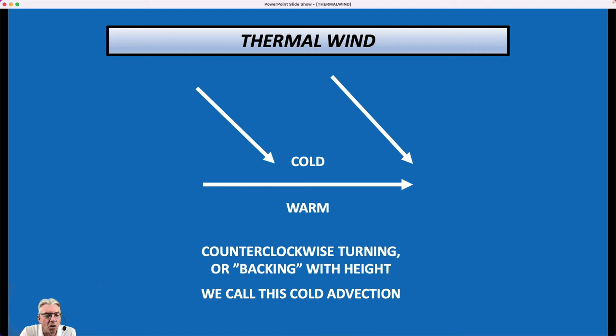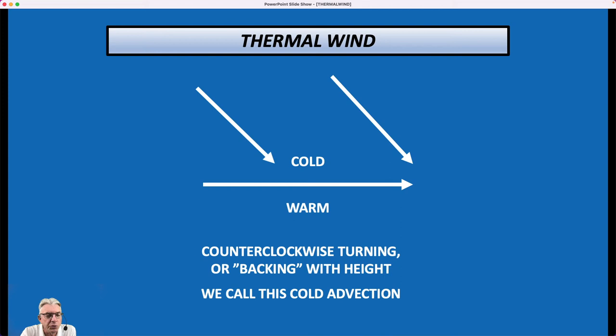In other words, the wind is advecting colder air in the direction of where the warm air is, and so if you're in between the two, you're getting colder with time. And you can sort of see that if you think of this arrow, the thermal wind as being an isotherm, a line of equal temperature, and the winds are blowing against it like that, then the cold air is going to advance or advect farther toward the south.